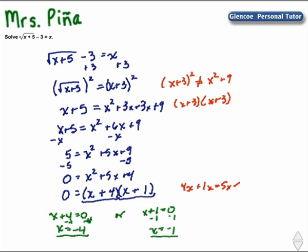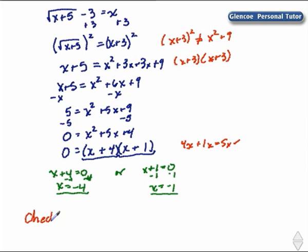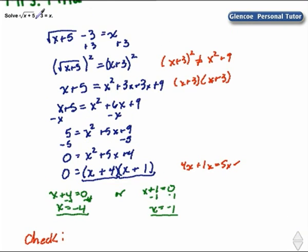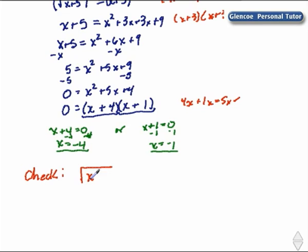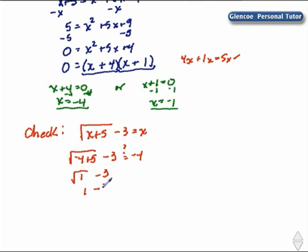I have to check. And in order to do my check, I need to make sure I go back to the original problem and put those values for x in and make sure that they work. My original problem is the square root of x plus 5 minus 3 equals x. So in for x, I'm putting negative 4 first. The square root of negative 4 plus 5, then minus 3. And I'm wondering, does that equal negative 4? Negative 4 plus 5 is 1, the square root of 1 minus 3. And keep simplifying. The square root of 1 is 1 minus 3 is negative 2. Does negative 2 equal negative 4? The answer is no. So negative 4 is not a solution.